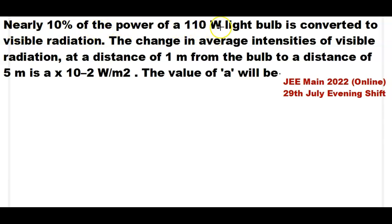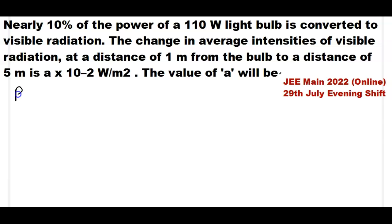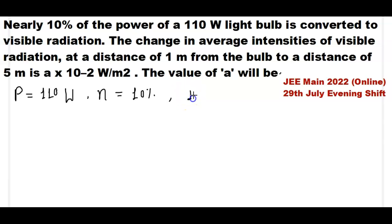Nearly 10 percent of the power of a 110 watt light bulb is converted into visible radiation. We need to find the change in average intensity of the visible radiation at a distance of 1 meter from the bulb to the distance of 5 meters, expressed as A × 10⁻² watt per meter square. The power of the bulb is 110 watt and the efficiency is 10 percent.